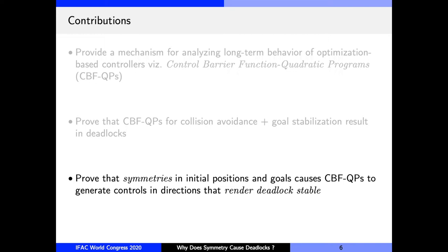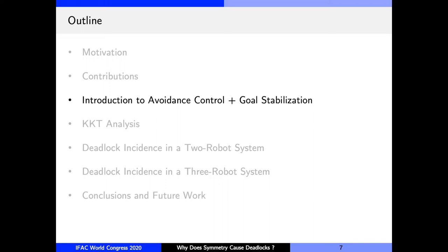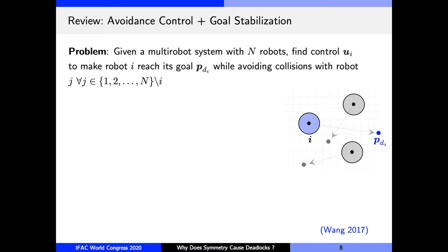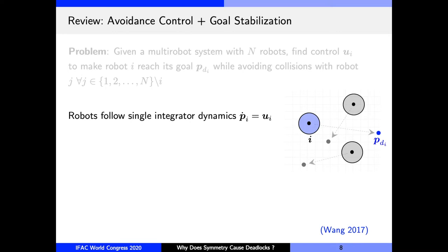Alright, so let us now review some terminology from avoidance control and goal stabilization. So let's see the setup. We have n robots in the plane. Let's just focus on one ego robot, that is robot i. The problem is to find a control u_i to make i reach its goal p_di while avoiding collisions with every other robot. We assume that all these robots are velocity controlled, so they follow single integrator dynamics. We also assume that there is a user-prescribed nominal control for each robot, which is simply a proportional controller. Now this control by itself guarantees exponential stabilization of each robot to its goal, but it does not guarantee that the resulting motions of the robots will be collision-free.